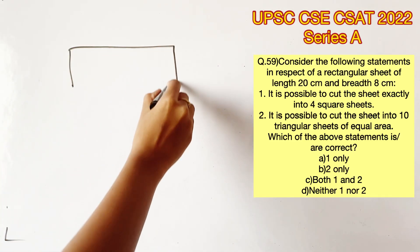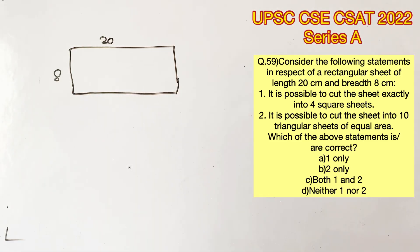Consider the following statements in respect of a rectangular sheet of length 20 cm and breadth 8 cm. Is it possible to cut the sheet exactly into 4 square sheets?